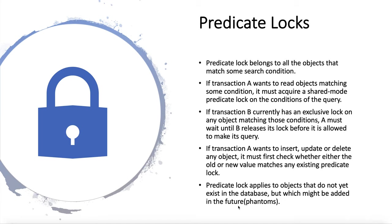Now let's look at predicate locks. In the previous sections we saw the problem of phantoms — that is, one transaction changing the results of another transaction's search query. We discussed the meeting room booking example where two people simultaneously search for available meeting rooms and happen to book the same room at the same time. Ideally, if one transaction has searched for existing bookings for a room within a certain time window, another transaction should not be allowed to concurrently insert or update a booking for the same room and time. To implement this, we need a predicate lock, which works similarly to shared and exclusive locks but belongs to all objects that match some search condition, such as available rooms at a particular time.